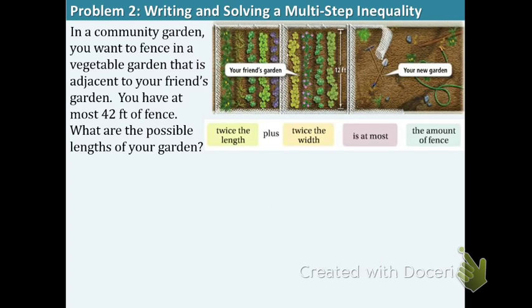Example 2. In a community garden, you want to fence in a vegetable garden that is adjacent to your friend's garden. You have at most 42 feet of fence. What are the possible lengths of your garden?